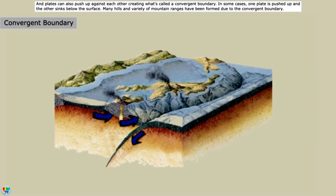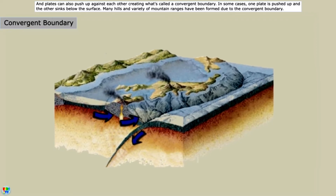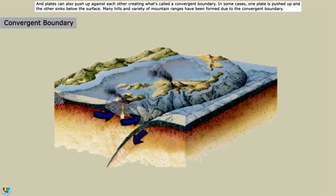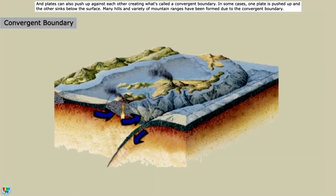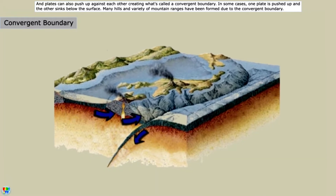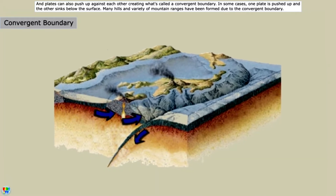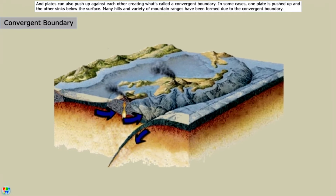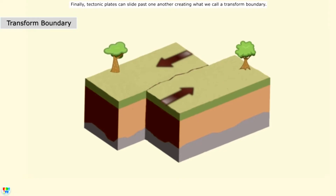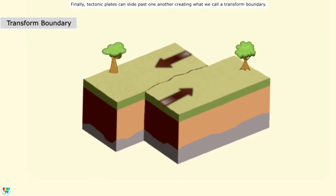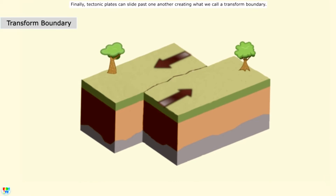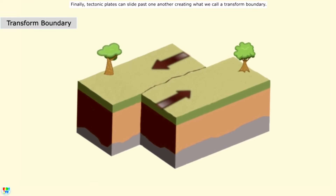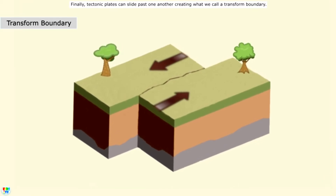In some cases, one plate is pushed up and the other sinks below the surface. Many hills and variety of mountain ranges have been formed due to the convergent boundary. Finally, tectonic plates can slide past one another creating what we call a transform boundary.